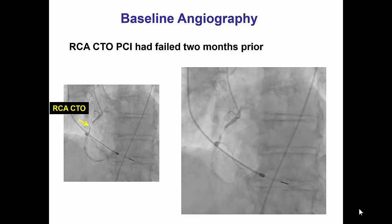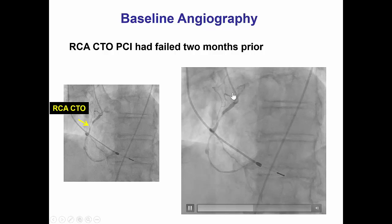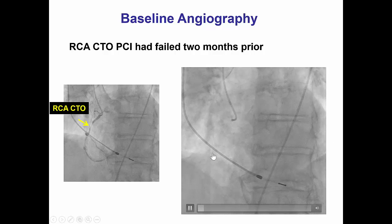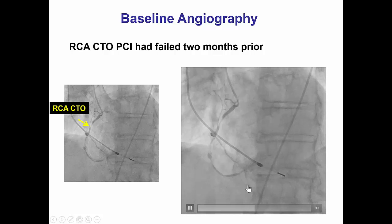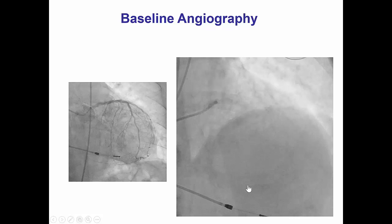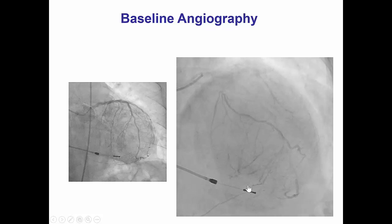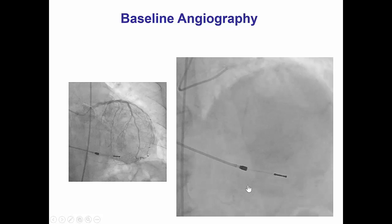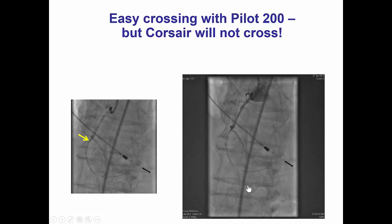Diagnostic angiography actually appeared to have a channel, so it did not appear to actually be a CTO. The vessel was heavily calcified, but there appeared to be a channel all the way from the proximal to the distal coronary artery. There was no significant disease on the left; however, there were some septal collaterals from the LAD to the posterior descending artery.